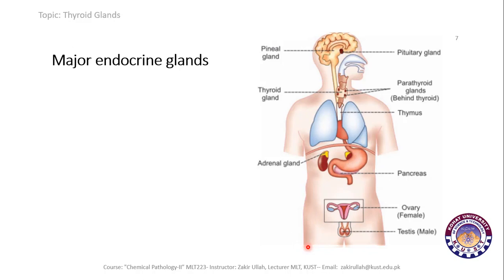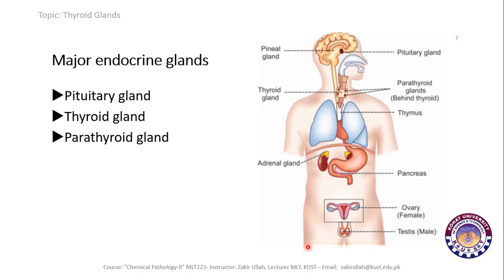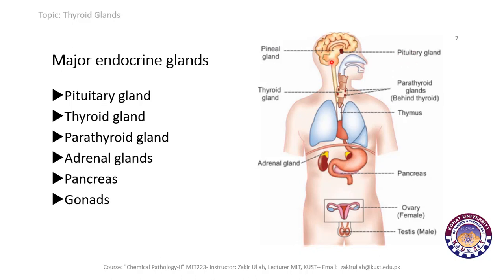The major endocrine glands of the body include the pituitary gland, thyroid glands, parathyroid glands, adrenal glands, pancreas, and gonads.